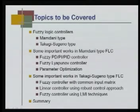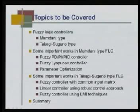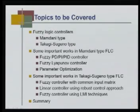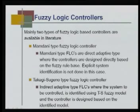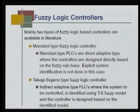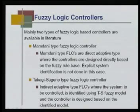Some important works in Mamdani type FLC include fuzzy PD, PI, PID controllers, fuzzy Lyapunov controller, and parameter optimization. Some important works in Takagi-Sugeno type FLC include fuzzy controller with common input matrix, linear controller with robust controller approach, and fuzzy controller using LMI techniques. Mamdani type controllers are direct adaptive type, designed directly based on a fuzzy rule base, without explicit system identification. Takagi-Sugeno type controllers are normally indirect adaptive type, where the system is identified using a TS fuzzy model and the controller is designed based on that identified model.